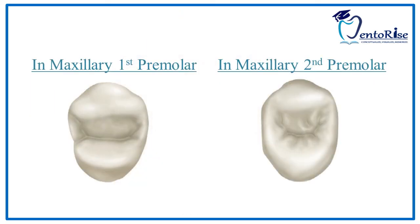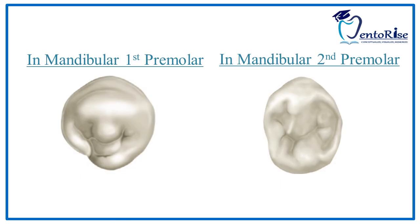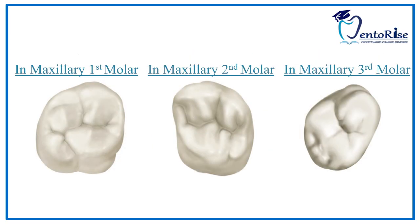Notice the triangular ridges present in the maxillary first premolar and maxillary second premolar — they start from the tips of the cusps and move towards the central part of the occlusal surface. The same pattern applies to mandibular first and second premolars. In the mandibular second premolar, since there are three cusps present, there will be three triangular ridges as well. Notice the triangular ridges in maxillary molars and mandibular molars as well.